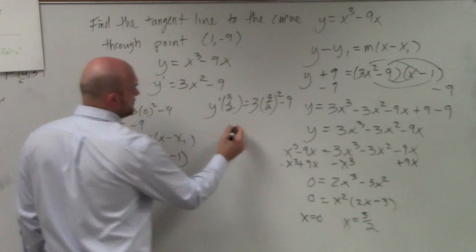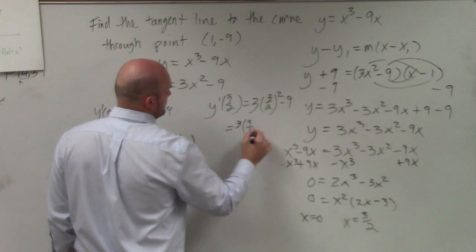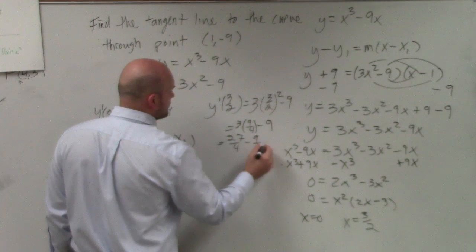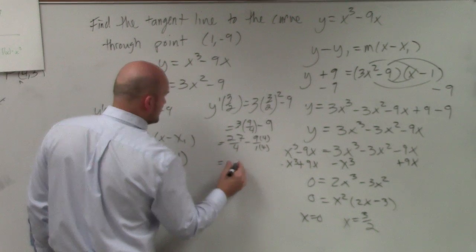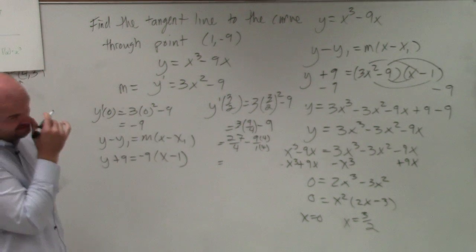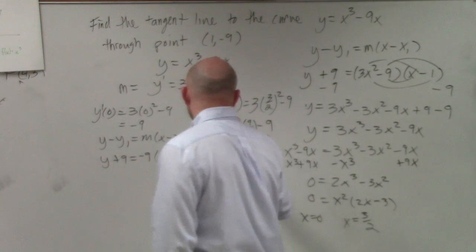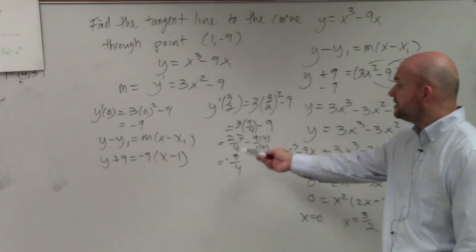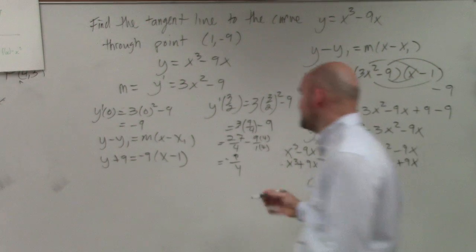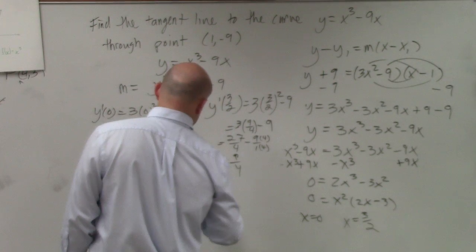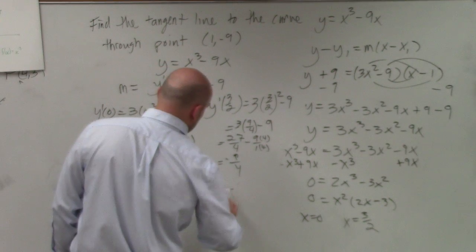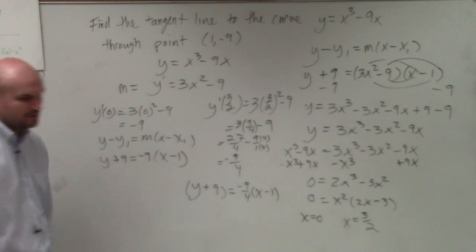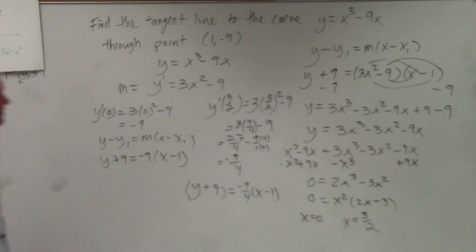That becomes 9/4 - 9. That becomes 27/4 - 9/1 multiplied by 4/4, which equals... that becomes 36. 27 - 36 becomes -9/4. Negative. And then that's my second slope. And then I'm still using the same point. So it would be y + 9 equals -9/4 times (x - 1).